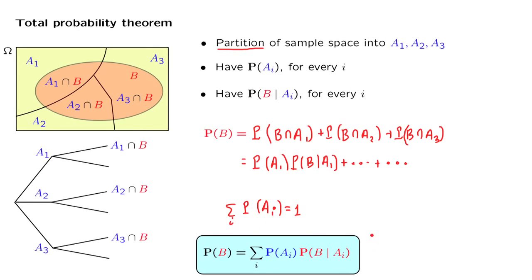So if we look at this formula here, we realize that it is a weighted average of the conditional probabilities of event B, where these probabilities of the individual scenarios are the weights.